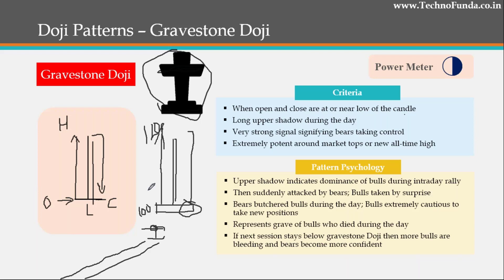The Gravestone Doji is very powerful when it occurs at the end of an uptrend — that is of very high significance. If it occurs during a downtrend, it's not much significant because bears are already in full control and it doesn't mean much about the market; bulls are simply still not able to form a bottom. But in an uptrend, it is very significant — particularly when a stock is forming an all-time high or a new 52-week high. It is at least a situation of alert, a cautious signal, which is why the power meter shows around 50% — a medium power pattern.